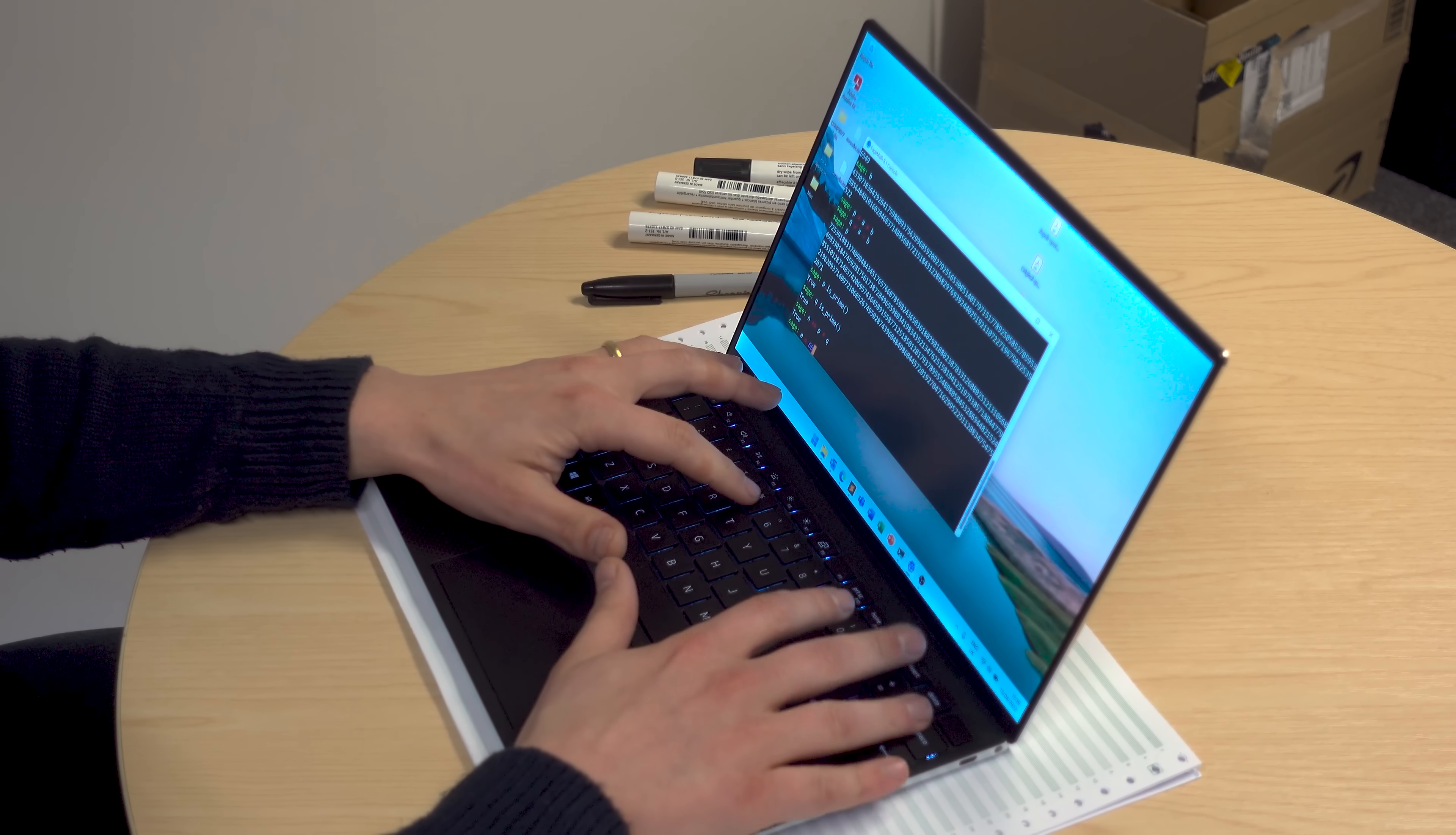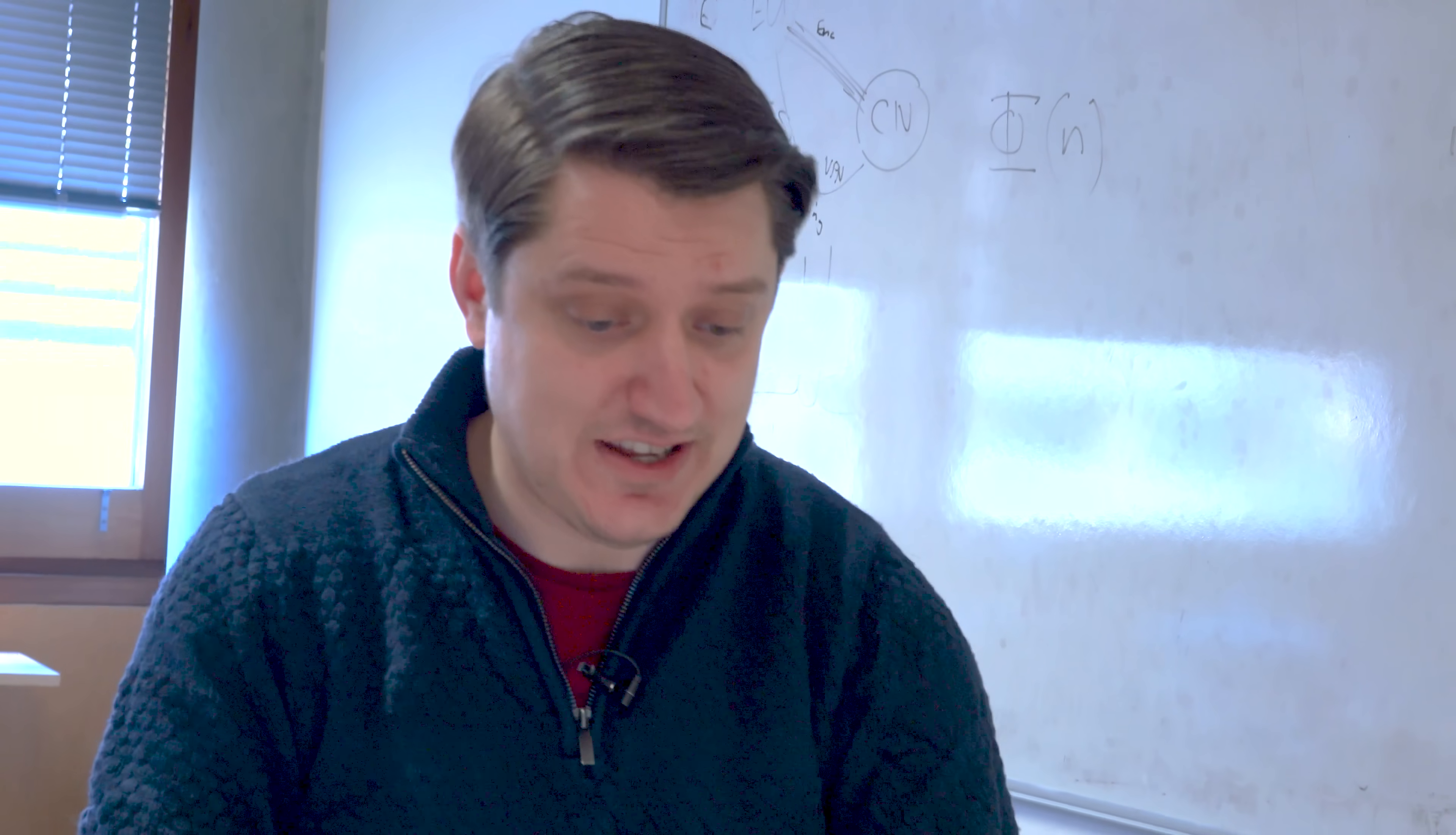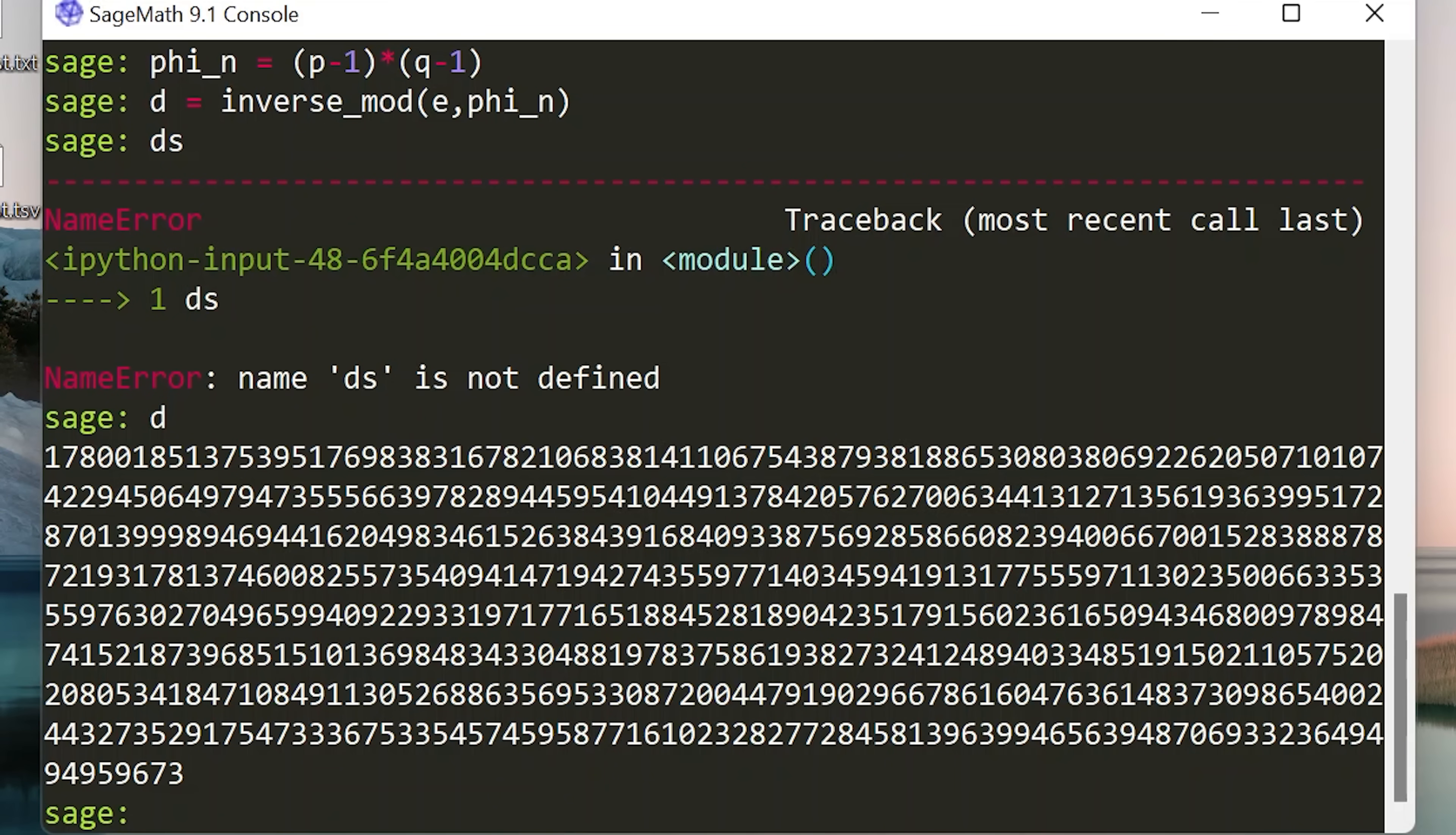So let's suppose E is 65537, right? Then what I do is I calculate the totient of N. So phi of N is equal to P minus 1 times Q minus 1. And then we have to calculate the multiplicative inverse, which is D. D is equal to inverse mod, it might be mod inverse, let's find out, of E and phi of N. D. Oops, that's not true. D. There we go. So E is that and D is that. So I've already calculated the private key. Not a lot of work.